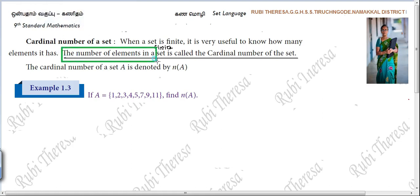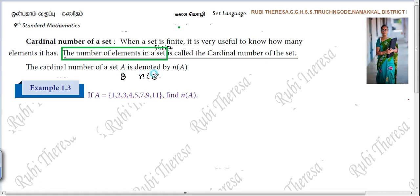The number of elements in a set is called the cardinal number of the set. The cardinal number of set A is denoted as N of A. If it is set A then N of A; if it is B then N of B; if it is X then N of X; if it is Y then N of Y.